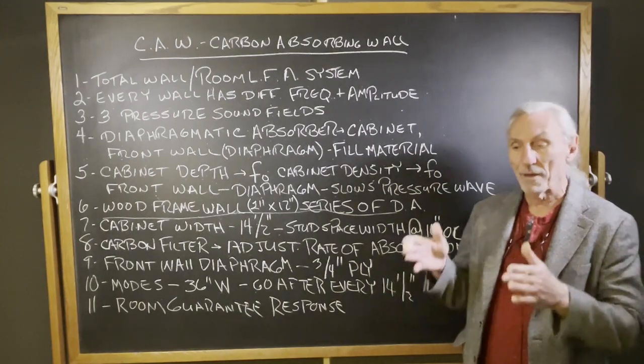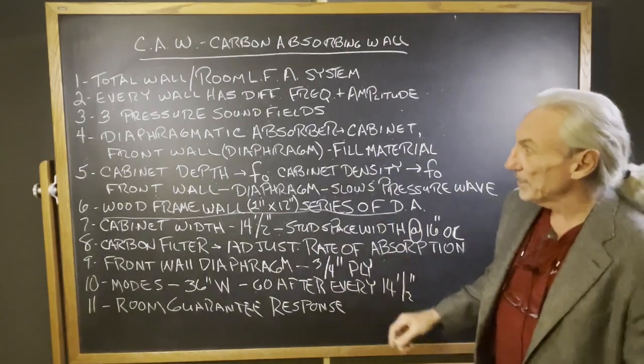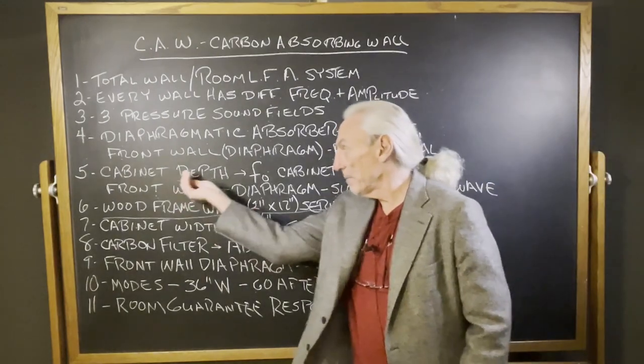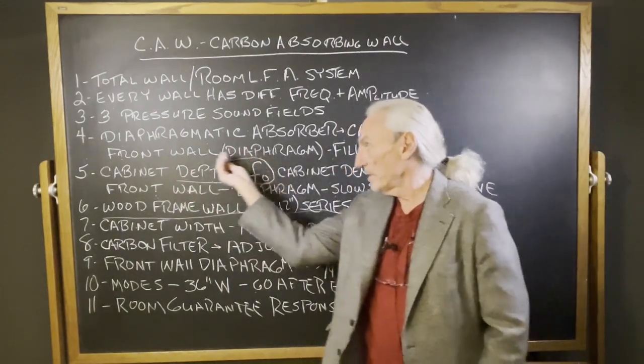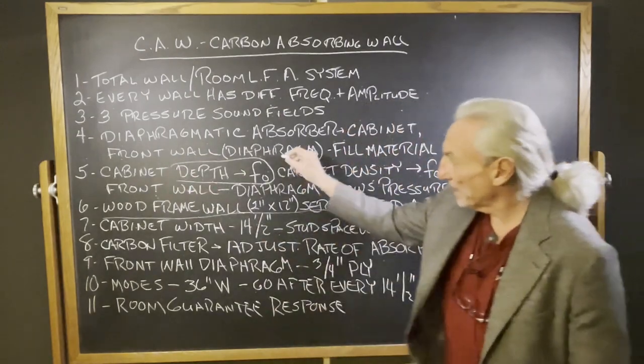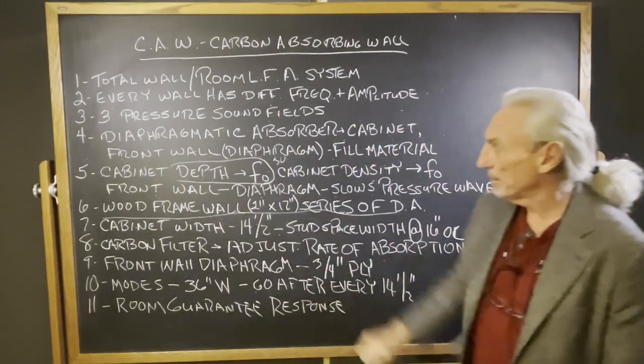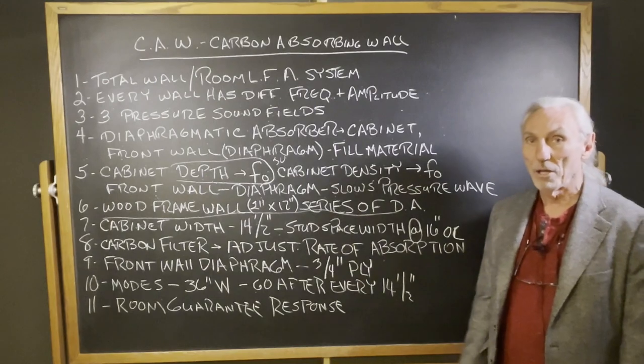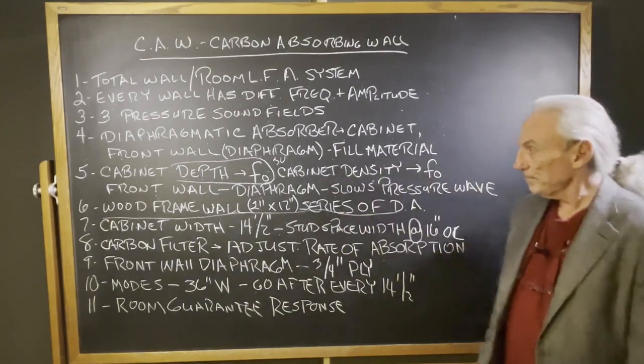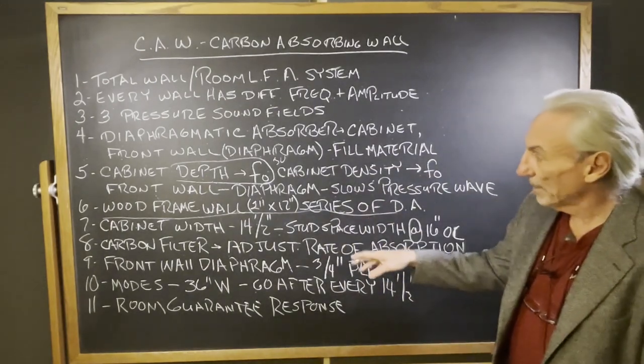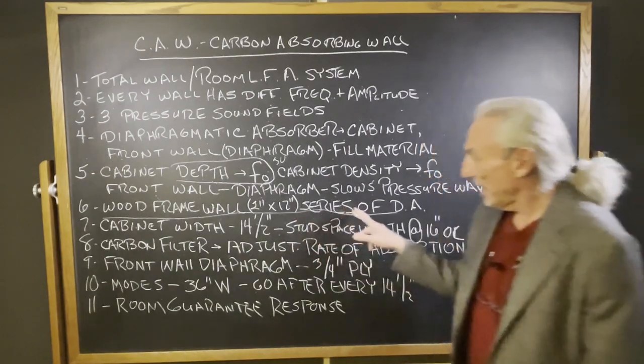2x12 is a specialty situation because we need that 12 inches of depth to get the resident frequency that we want. We can get down to 30 hertz in 12 inches. That's pretty low. So we need that depth, 2x12 depth, every 14 1⁄2 inches.